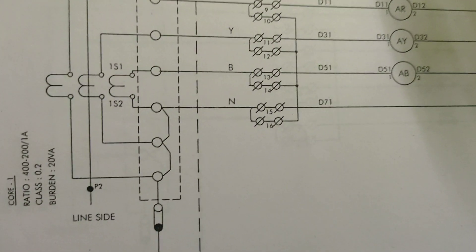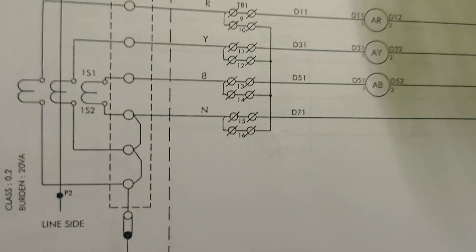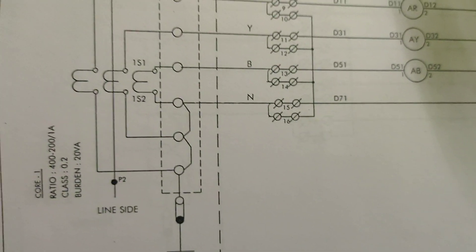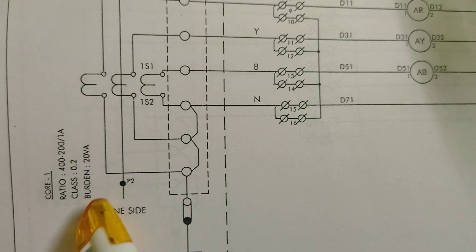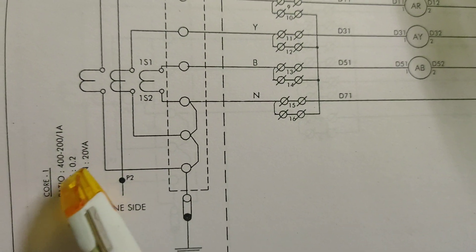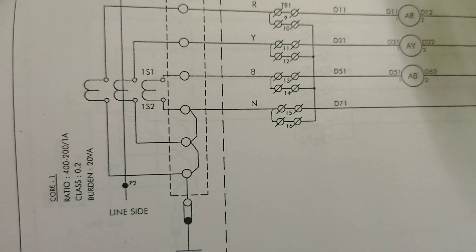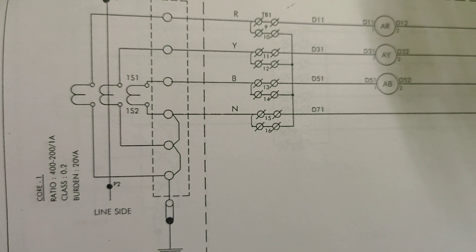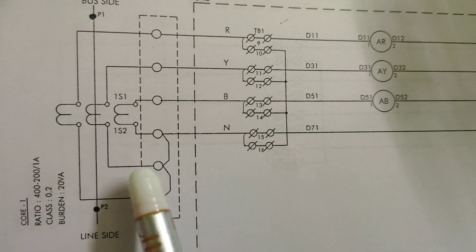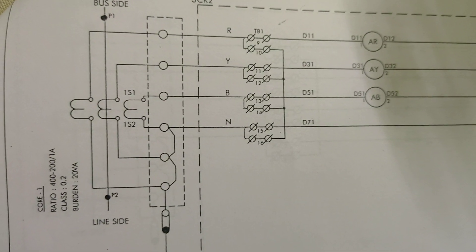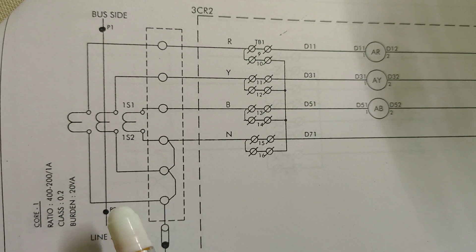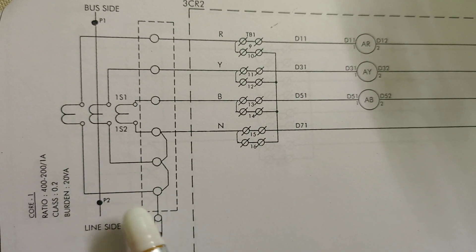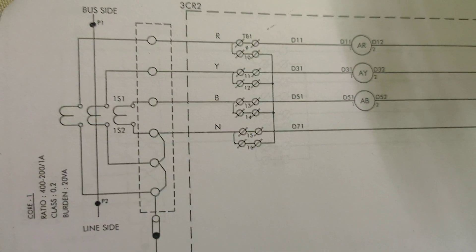Today I am considering a CT of 400/200/1, class 0.2, burden 20VA. As we are discussing the metering circuit, we consider core 1. Core 1 of the current transformer is used for metering purpose — it is accuracy class 0.2.